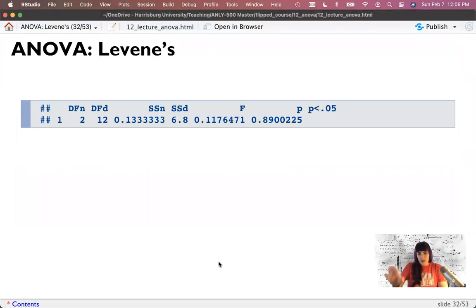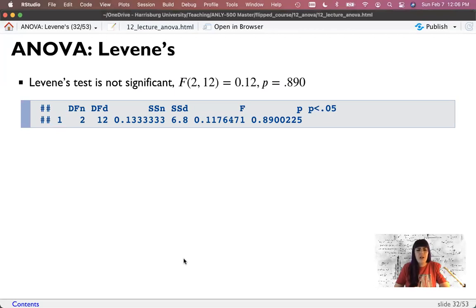All right. Now I printed out just Levene's all by itself here so that we can look at those numbers. And here's how we'd report it. We'd say F, Levene's test is not significant. F, 2 and 12 equals 0.12. P equals 0.890.